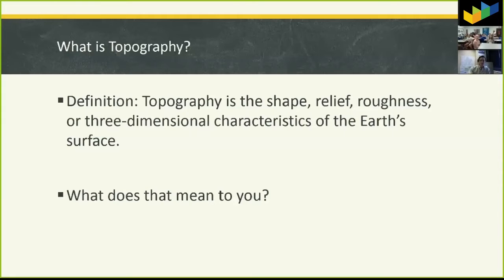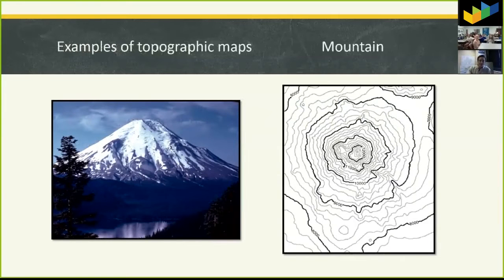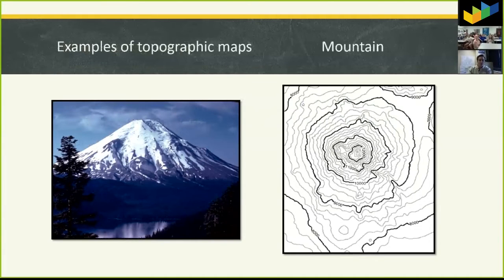Let's get into some examples, like a mountain. Here's a picture of Mount Shasta and you can see the related topography image on the right. You can totally see it kind of looks like a 3D image almost, doesn't it?